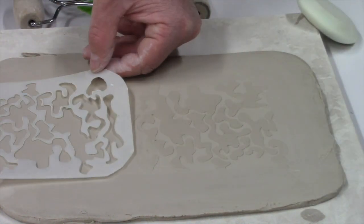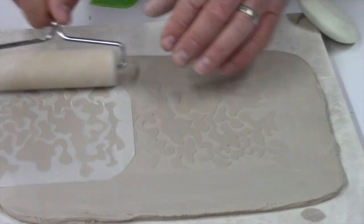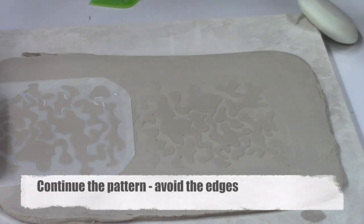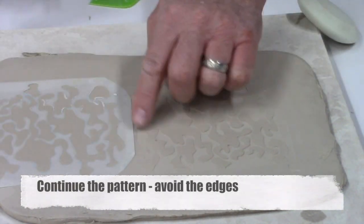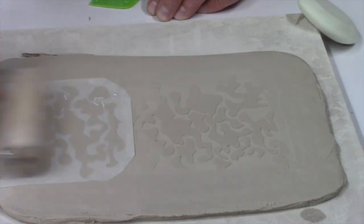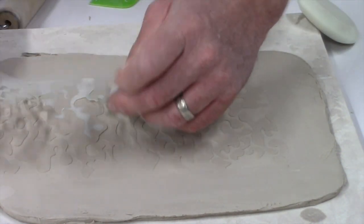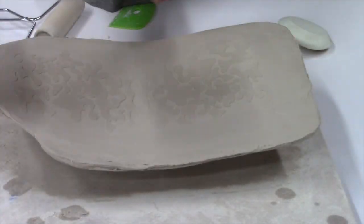You can lay down your stencil again and try to continue the design on. Here we basically just try to match up some of the designs, and again we're missing the hard edges of the stencil and just rolling over the design pattern. You can peek by pulling up a corner and make sure that it looks good.